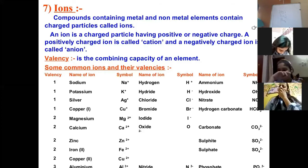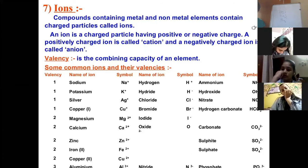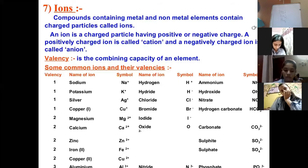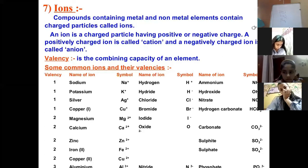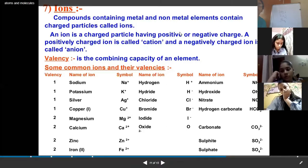Polyatomic ions can be anions. As you can see on your screen, they are all anions — for example, ammonia and hydroxide. Hydroxide is another polyatomic ion. Once again, a polyatomic ion is a group of atoms that behave like a single entity and have a proper valency.